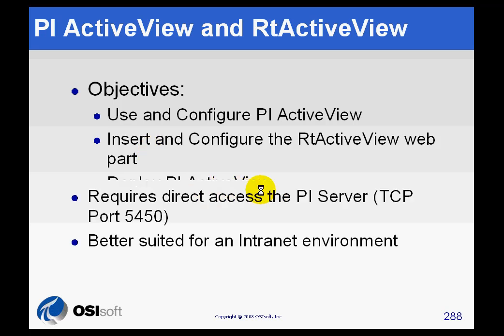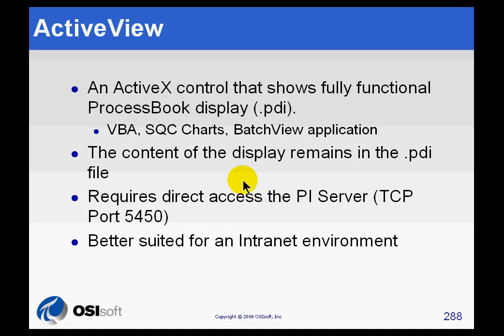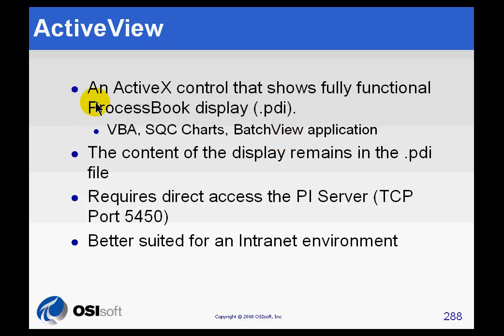PI ActiveView is an ActiveX control that shows the full functionality of ProcessBook, including all the things that you give up when you move from a ProcessBook display into RT Web Parts. That would be things like VBA, the SQC charts, and the BatchView applications. ActiveView is an ActiveX control that implements the full set of features not yet implemented in RT Web Parts.